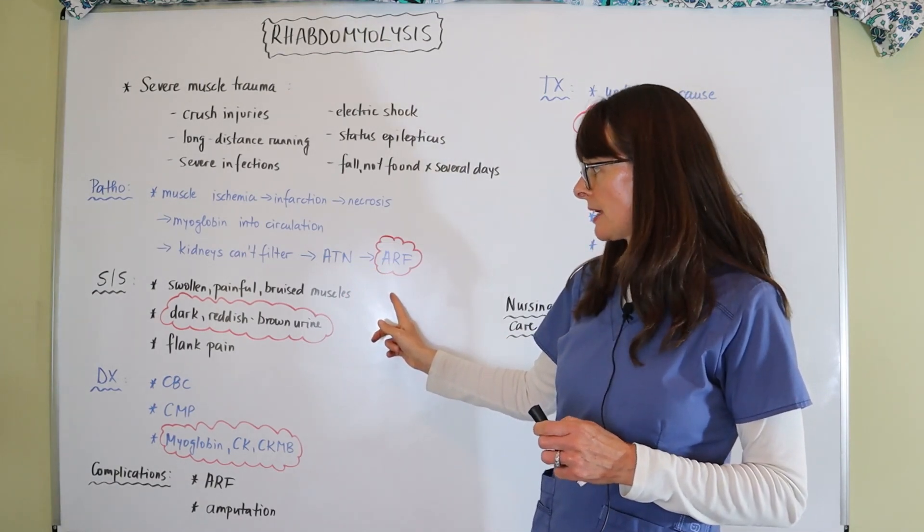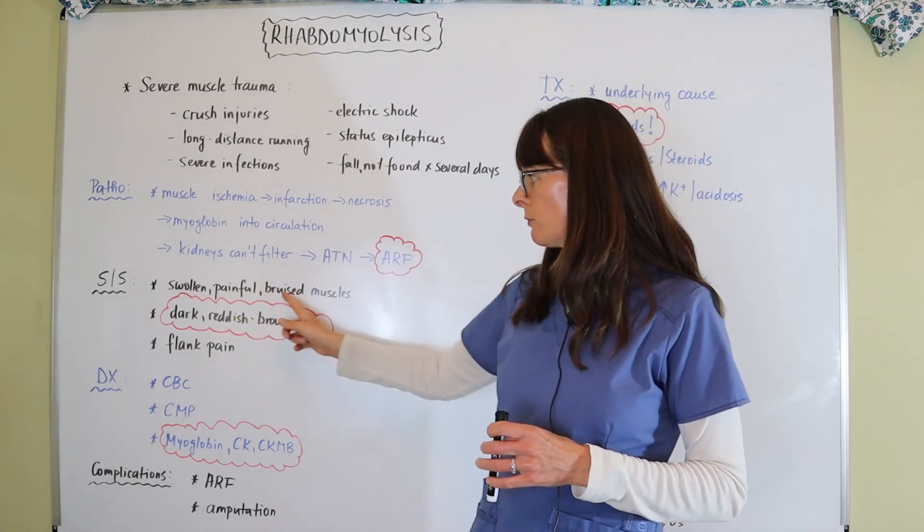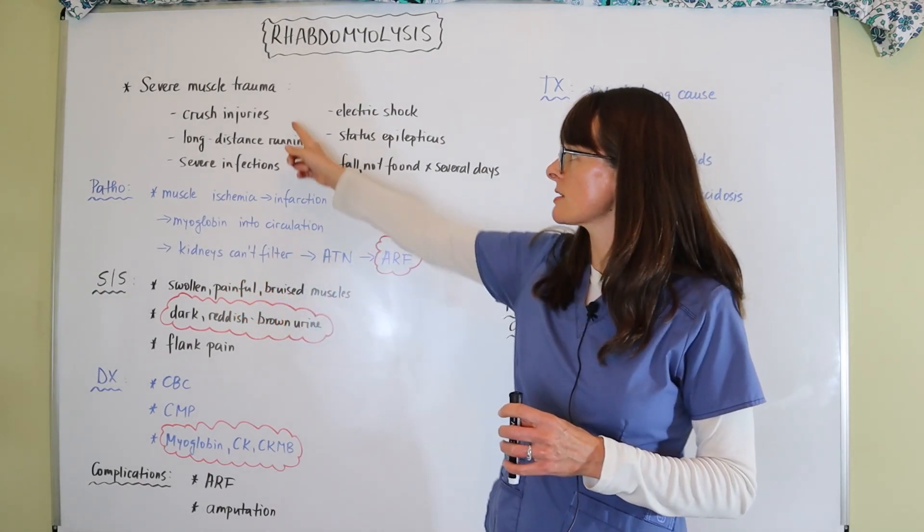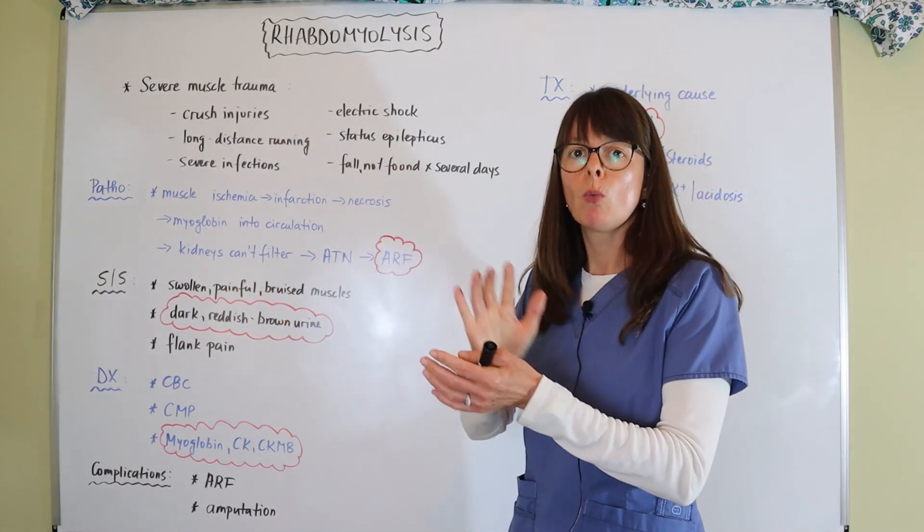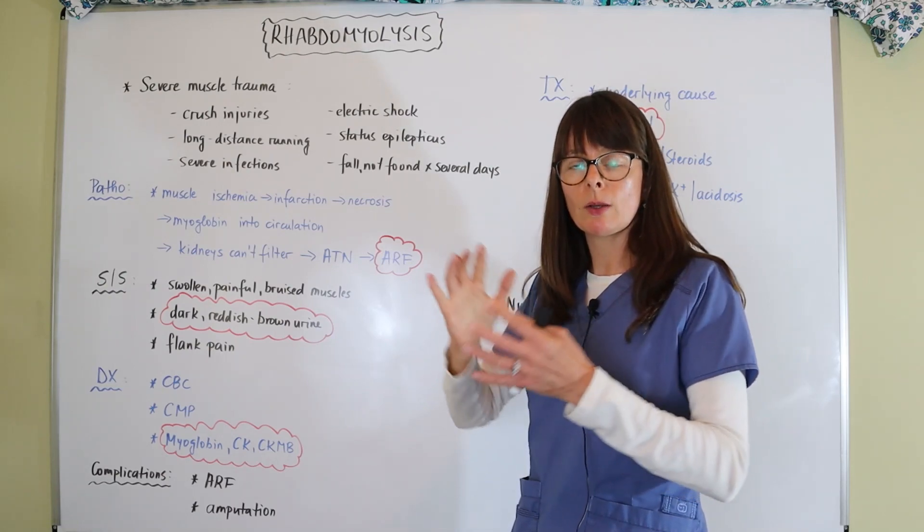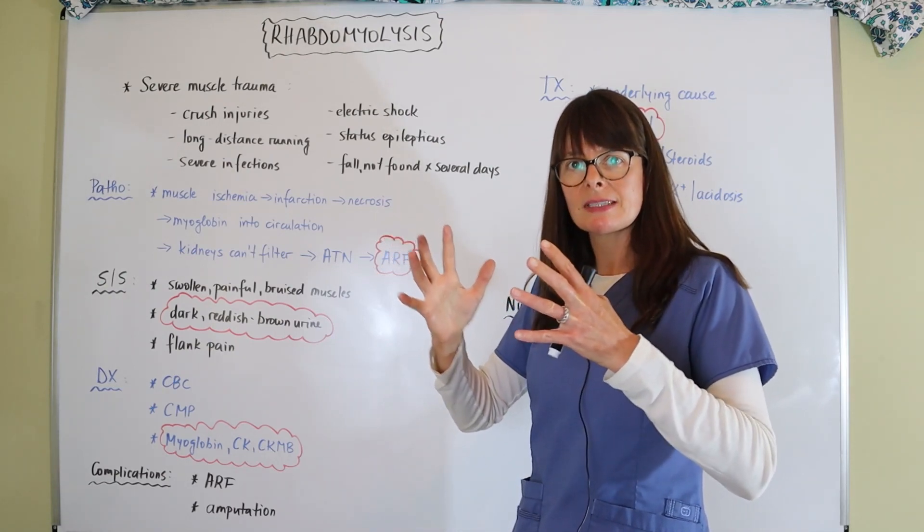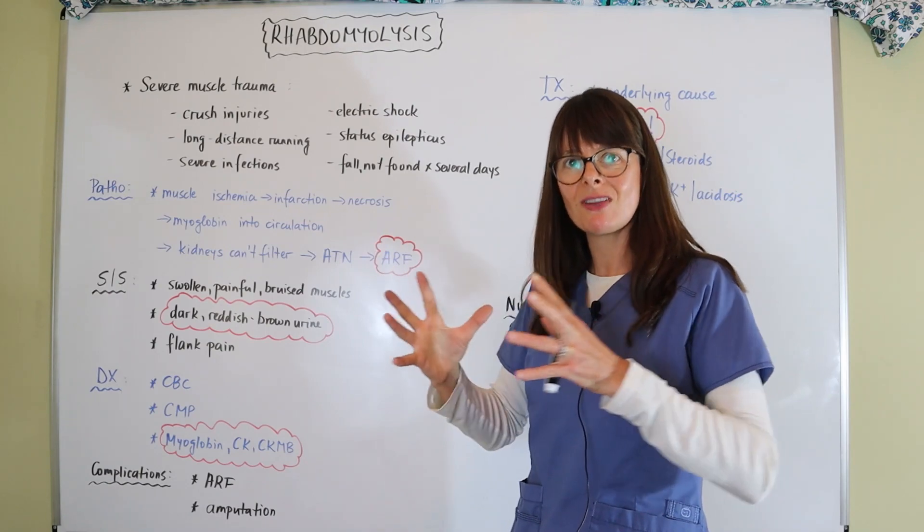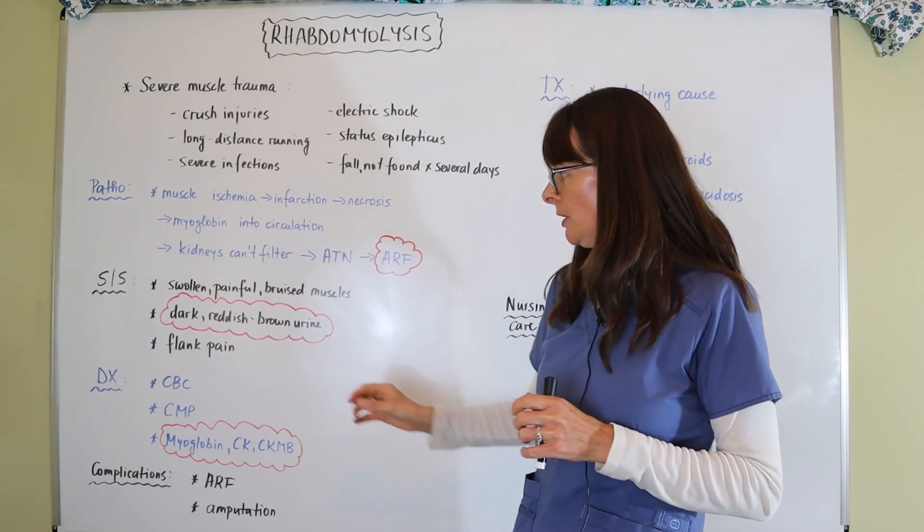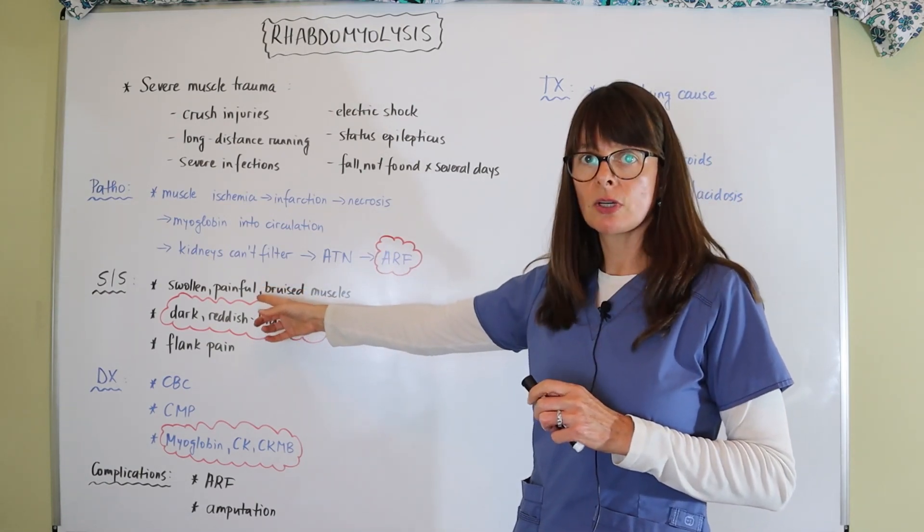Signs and symptoms here are swollen, painful, and bruised muscles. Just imagine somebody who had a crush injury, what that muscle would look like when it has been compressed and there's all this hematoma, severe ecchymosis and bruising there. Swollen is certainly painful.